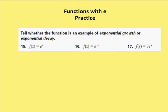All right, moving on to the next set of problems. Tell whether the function is an example of exponential growth or exponential decay. So, again, you've got to remember that e is 2.718. That value of b, remember, in exponential growth or decay, if that value of b is greater than 1, then I know that I have exponential growth. So, in this case, this is going to be growth.